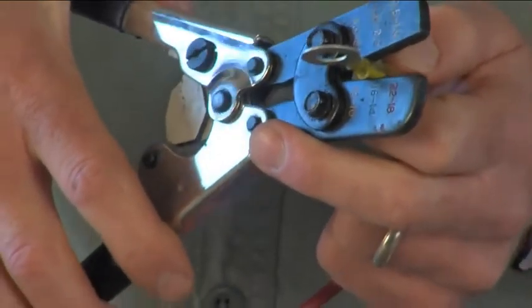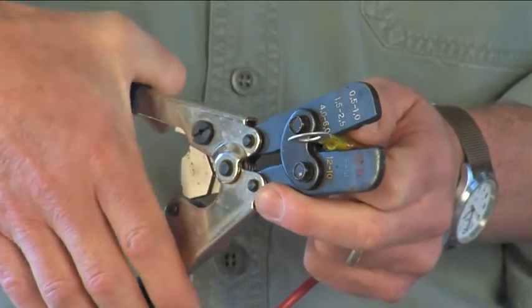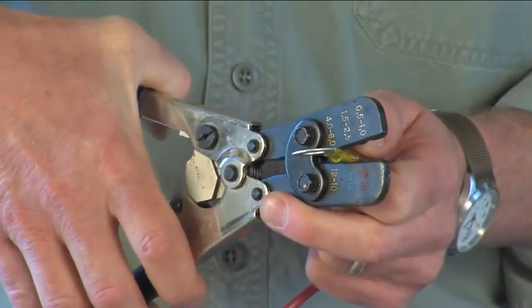Now find the proper size cavity on your ratcheting crimpers and apply even pressure to both sides of the sleeve to make the crimp.